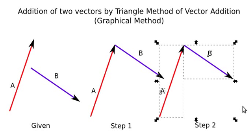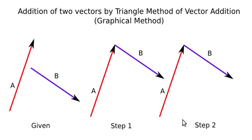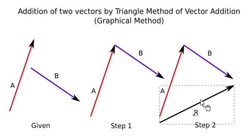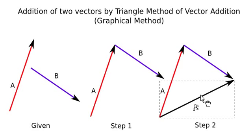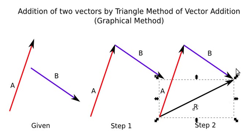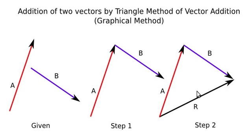Now to complete step two, I will bring the resultant vector and complete the step — it is simply joining the tail of A to the head of B. This vector R is the resultant of vector A plus vector B.